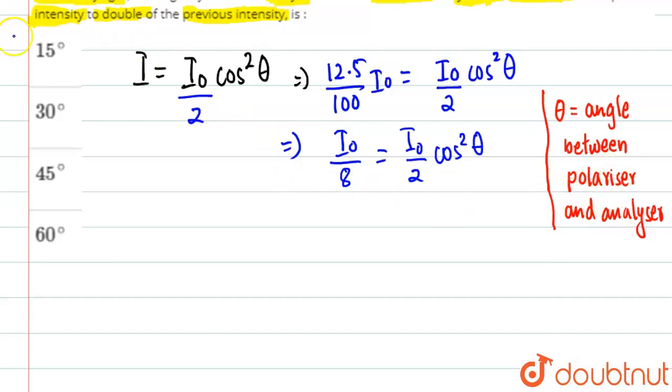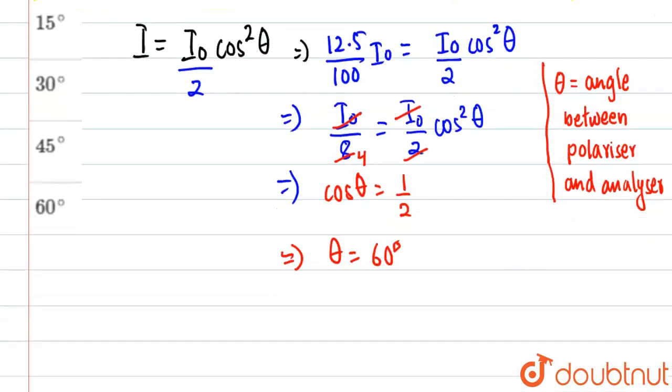Now what we have from here is that this I₀ gets canceled with I₀, and 2 gets canceled 4 times basically. So we're going to have cosθ = 1/2. From here we get θ = 60°.